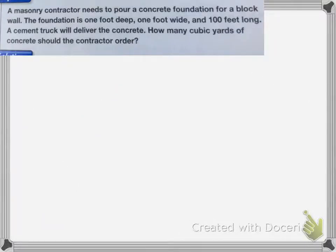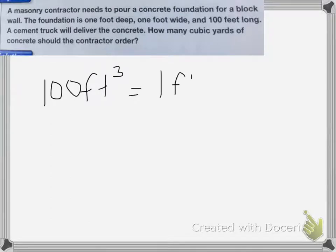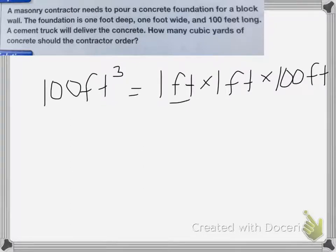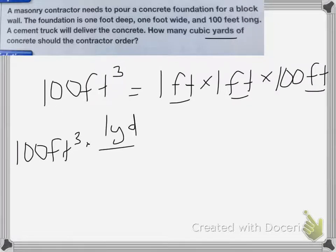In this next one, a masonry contractor needs to pour a concrete foundation for a block wall. The foundation is one foot deep, one foot wide, and 100 feet long. How many cubic yards of concrete should the contractor order? A foundation is a rectangular prism. Its volume is 100 feet cubed, equal to one foot times one foot times 100 feet. I need three unit multipliers to get rid of the feet and change them into yards.